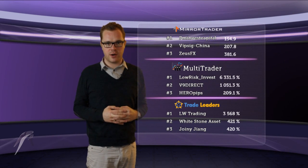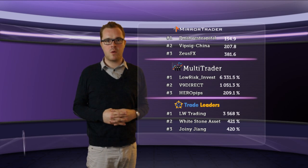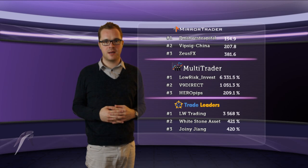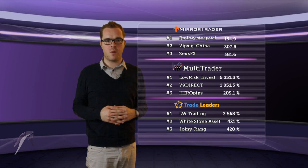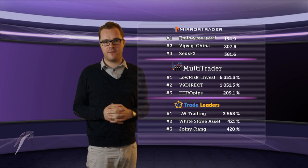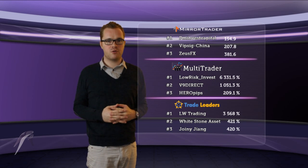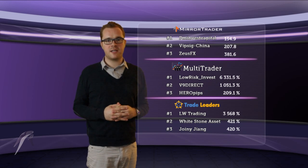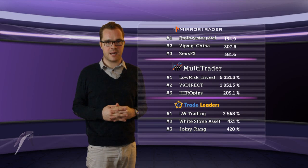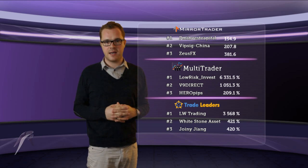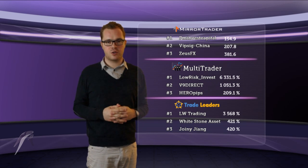As you can see on your screen, we have a table of the best traders and strategies available for you to join. Starting with the Mirror Trader Platform, Vipzig China strategy added 12.4 pips, but the biggest change occurred in USFX which added 67.1 pips, and PM Invest Capital strategy remains in first place. On the Multi Trader Platform, the best performance was shown by V9 Direct which rose 20.7% to 1,051.3% in total. Low Risk Investment also rose, but less, at just 16.8%. Moving to the Trade Leader Platform, LW Trading showed a rise of 48%, while Whitestone Asset is now in second place thanks to a 1% lead. Johnny Zhang now stands in third place with 420%.